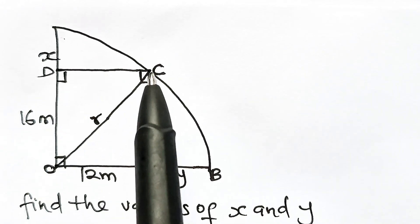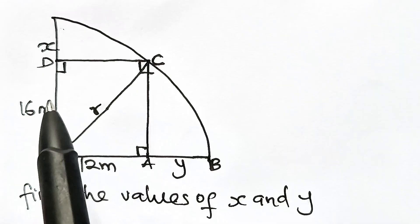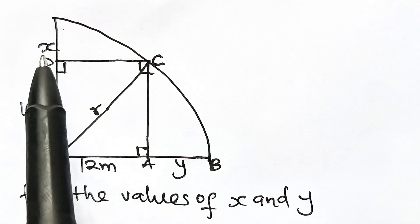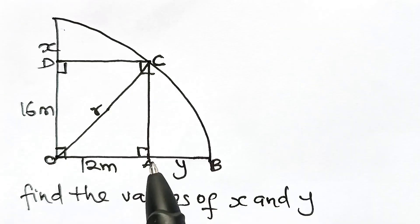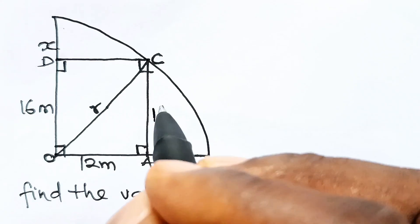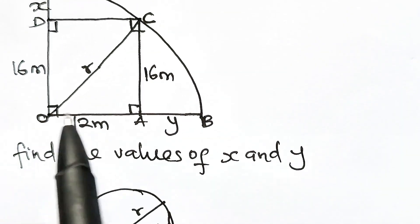OADC is a rectangle, and as such the opposite sides are equal. So OD is equal to AC, which means that AC is also equal to 16 meters. Now let us draw out triangle OAC.